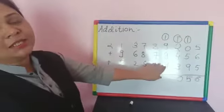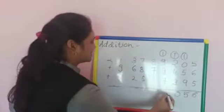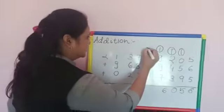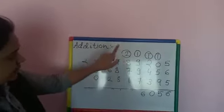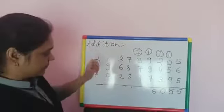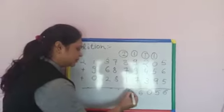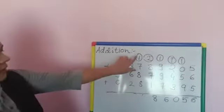Then 19 plus 7, how many? 26. 6 is here, 2 is carry over. Now, 2 plus 8 is 10. 10 plus 7 is 17. 17 plus 1 is 18. Then 8 is here, 1 is carry over.